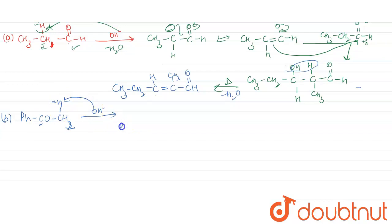And it forms Ph-C double bond O-CH2 negative. So this negative comes here, O near here and then again resonating structure like Ph, this is Ph-C-O negative double bond CH2.